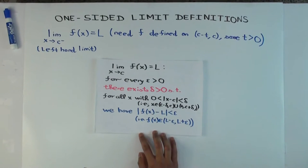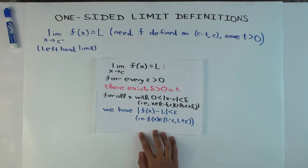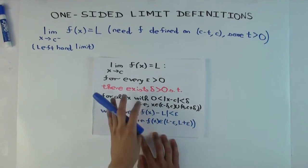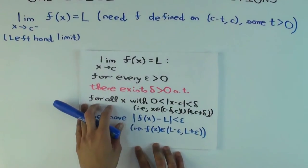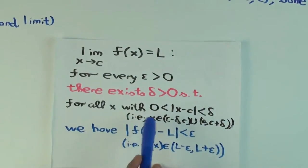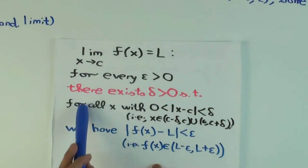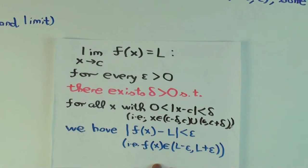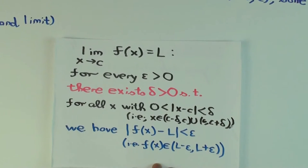Now, with the left and right-hand limit, what we're trying to do is we are trying to consider only one-sided approaches on the x. So what will change when we do the left-hand limit? What will be different from this definition? We approach c from the left. So what part of this definition will change?